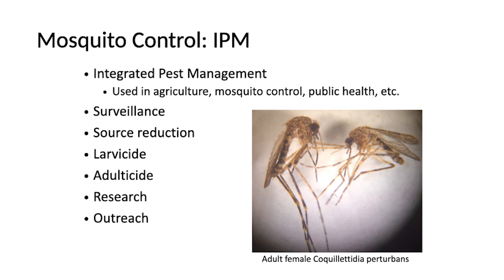Now that we know a little bit about the diseases, we'll talk about how we control mosquitoes and protect ourselves. When we're trying to control mosquitoes, we use something called integrated pest management or integrated mosquito management. It's a really common practice used in agriculture and public health. It means we're using all of these different tools to control mosquitoes in the best way possible — not just pesticides — in order to more effectively control them and reduce our reliance on pesticides.